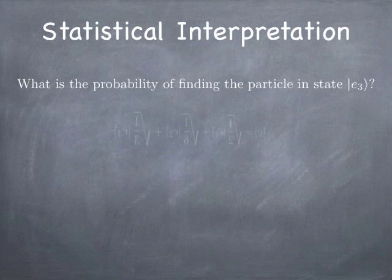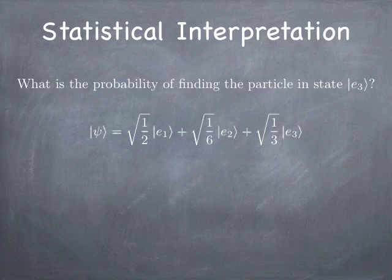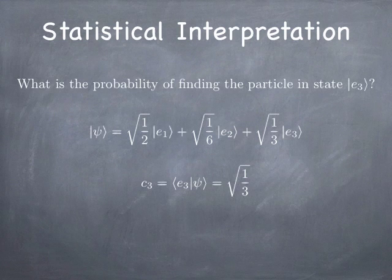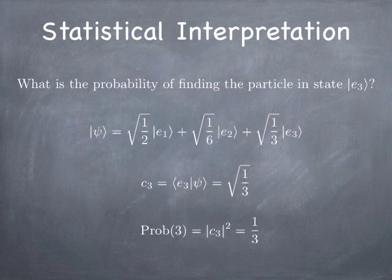Let's take an example. Suppose we have a quantum mechanical superposition of three eigenstates of some observable, and we want to know the probability of measuring the particle in the state E3, one of the basis states. You can look at that superposition and see right away that the amplitude of being in state E3, given that you start in state psi, is the square root of one-third. The square of that number is one-third, so we end up with a probability of one-third.